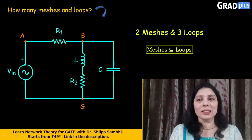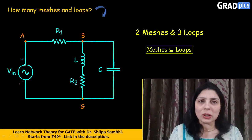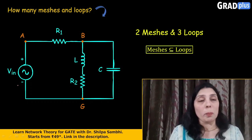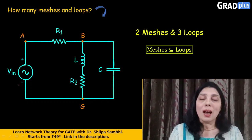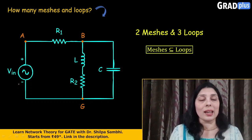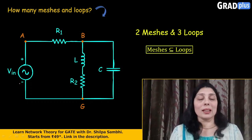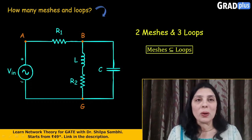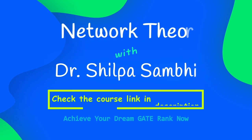To summarize: we have two meshes and three loops in this circuit. You can say that meshes are a subset of loops. Just remember that both meshes and loops are closed paths in an electrical circuit, but a mesh does not contain any other mesh inside it, while a loop may or may not contain a mesh or a loop inside it. I hope this basic concept is clear. Do watch and follow us for more such videos and concepts. Thank you and happy learning.